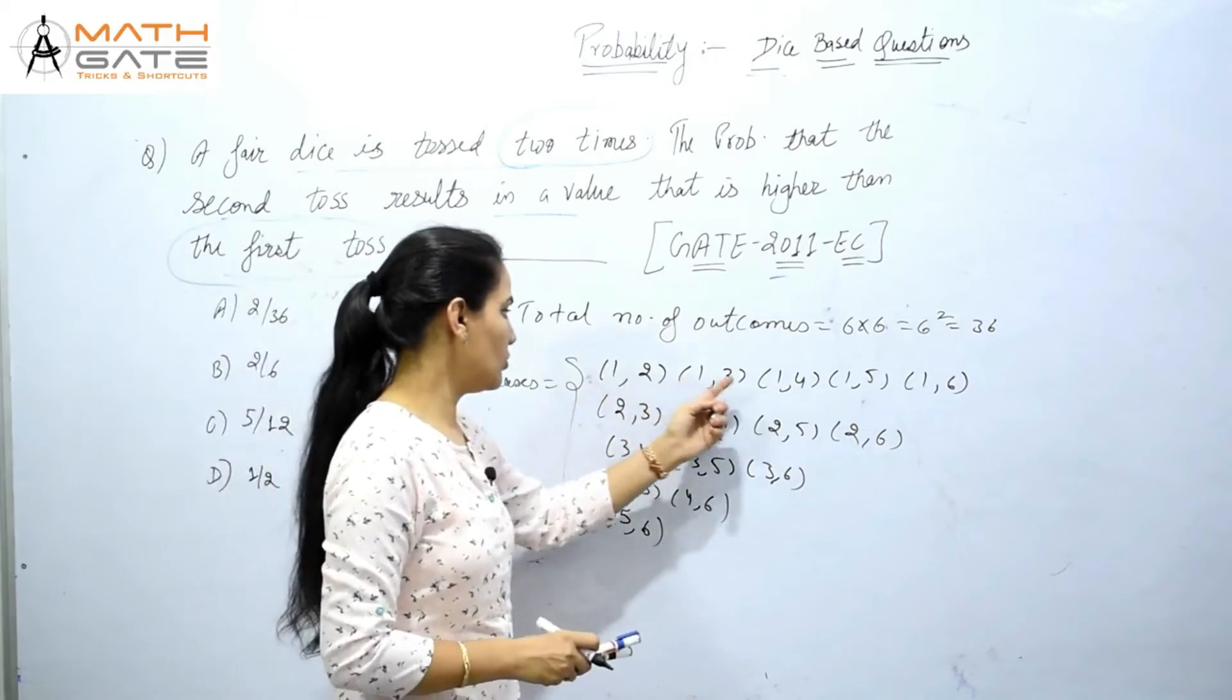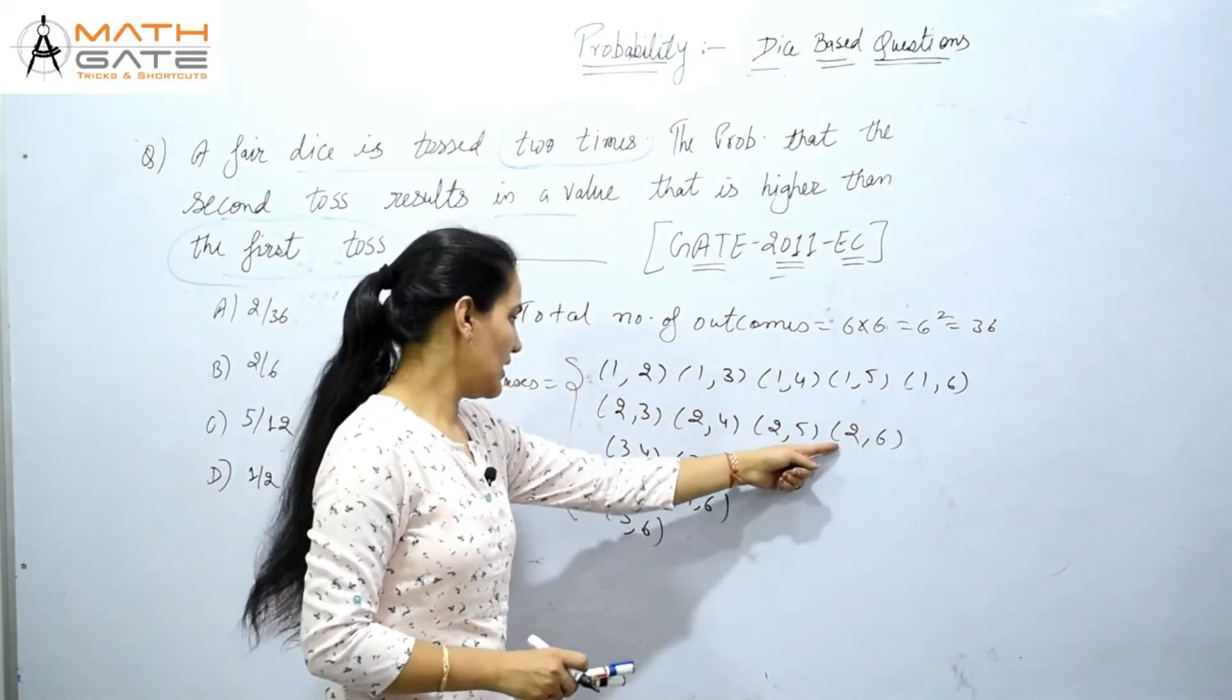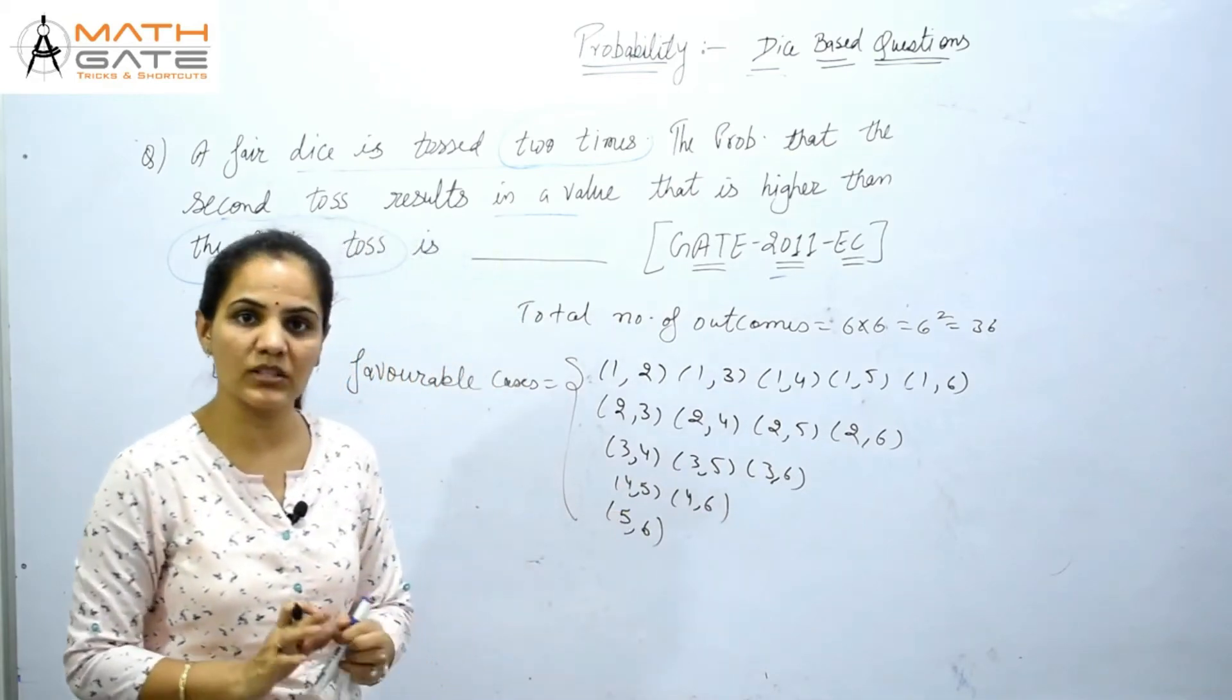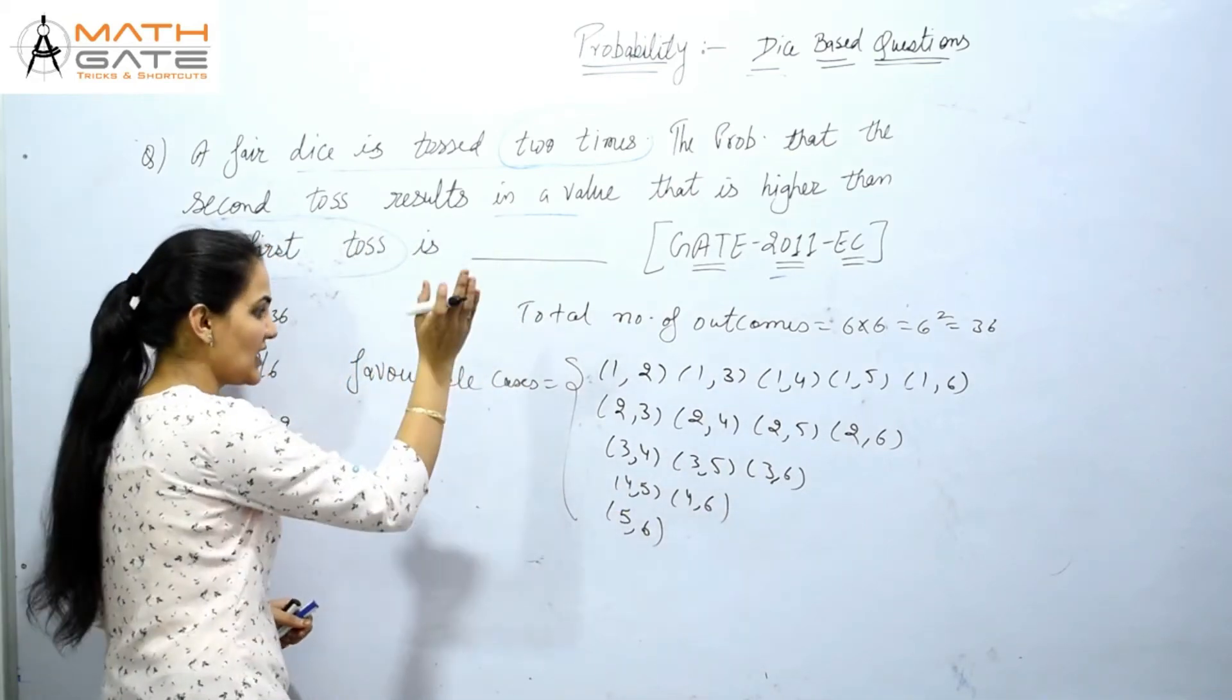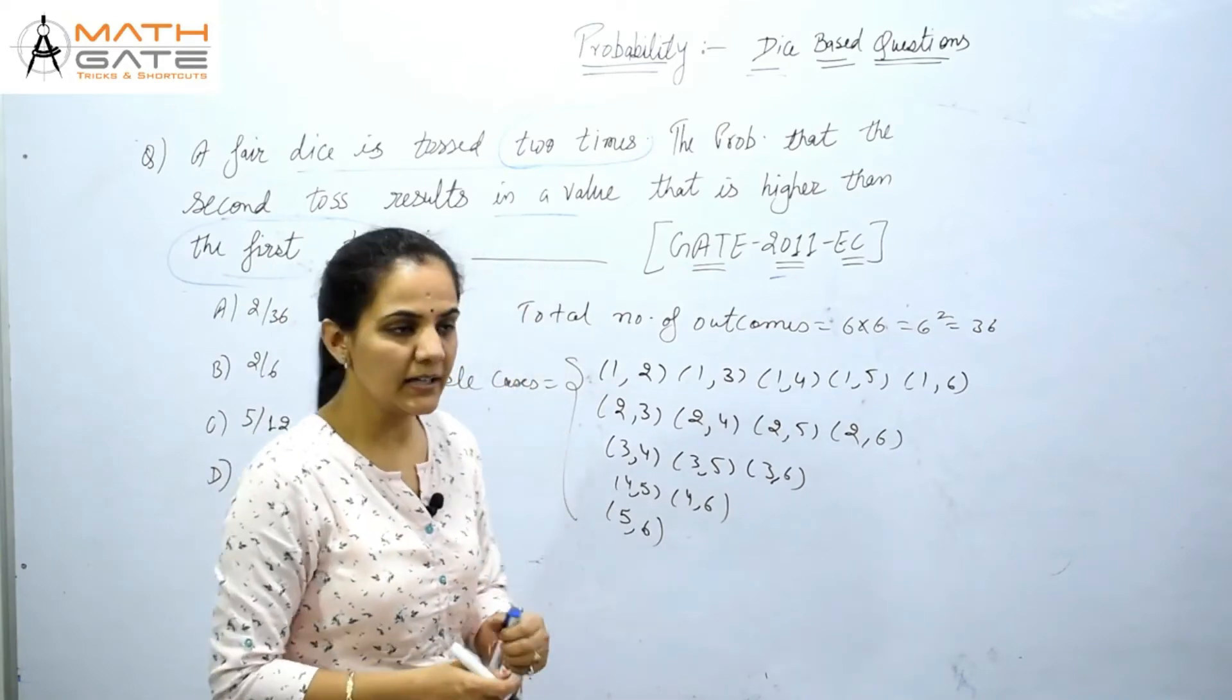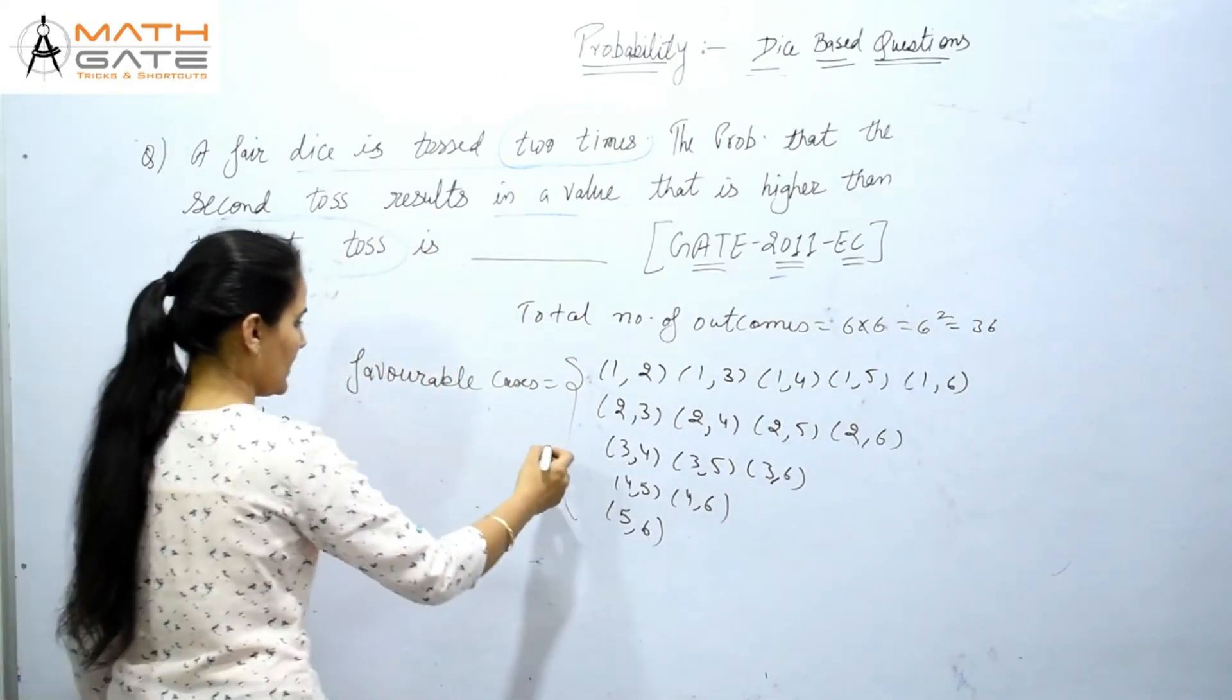So you can count: one, two, three, four, five cases; six, seven, eight, nine, ten, eleven, twelve, thirteen, fourteen, and fifteen cases total. These are the cases when the second dice value is higher than the first. So our favorable cases are 15.